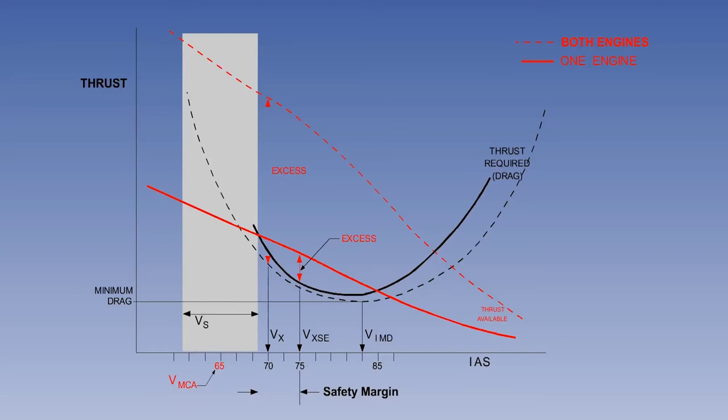Since thrust decreases with forward speed, and total drag increases above and below the minimum drag speed, VIMD, the best angle of climb is achieved at a speed below VIMD, but at a safe margin above the stall speed.